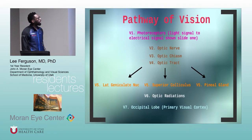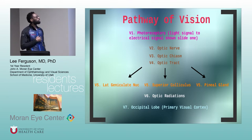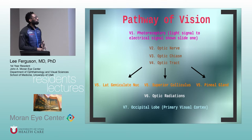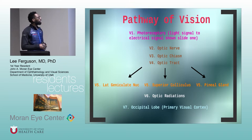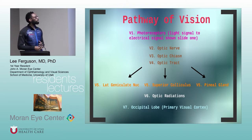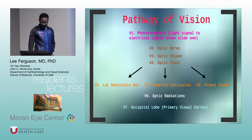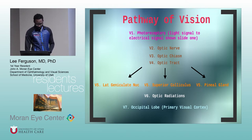In terms of the pathway for vision: after the photoreceptors process the light signal, it travels through the optic nerve, eventually reaching the optic chiasm, then the optic tract, and then goes on to sub-nuclei in the brain. You have the lateral geniculate nucleus, the superior colliculus, and the pineal gland. It then goes through the optic radiations, finally reaching the occipital lobe, which is the primary visual cortex.